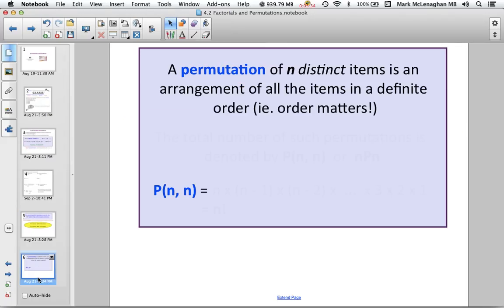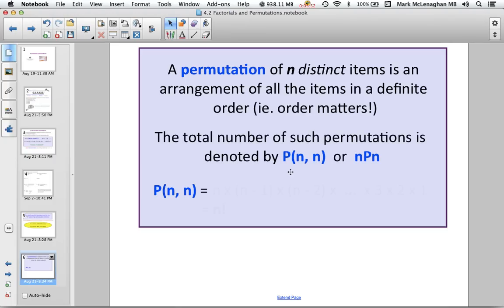Right, so now we've talked about a factorial. What's a permutation? A permutation is n distinct items arranged in order with definite order. So order matters. Okay, so chapter 4 is all about order matters. So the total number of permutations is denoted as P n comma n or n P n. You can kind of flip back and forth between the two. So we'll get it covered. Okay, so P n is n times n minus 1 times n minus 2 times dot dot dot dot dot times 3 times 2 times 1, or just n factorial.